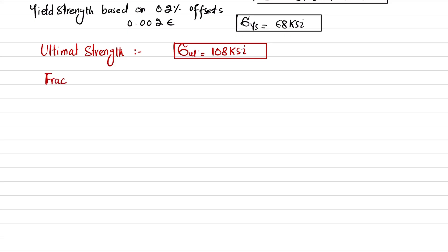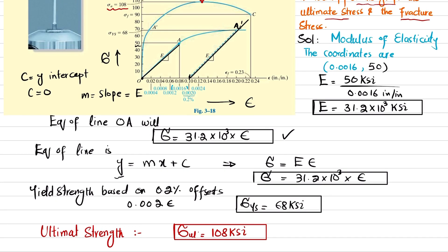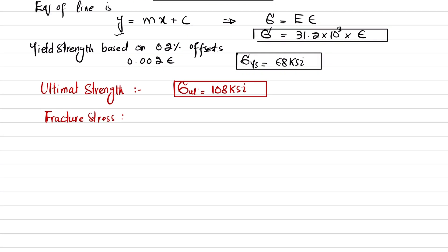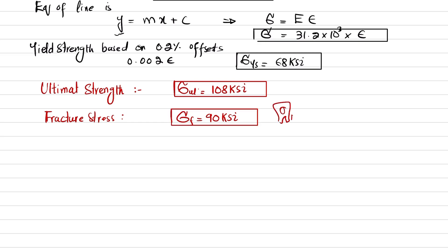The fracture stress: the specimen strains up to a maximum of 0.23 inch per inch, and at this point the material fails. The stress corresponding to this maximum strain where fracture occurs is the fracture stress, which is 90 ksi. So fracture stress equals 90 ksi. These are all the answers for Example 3.1.